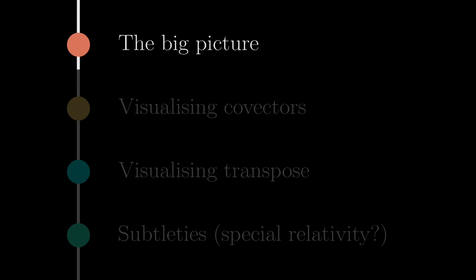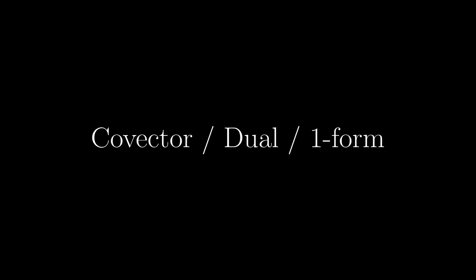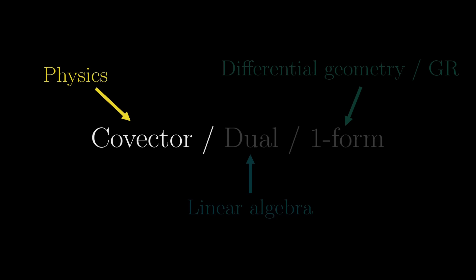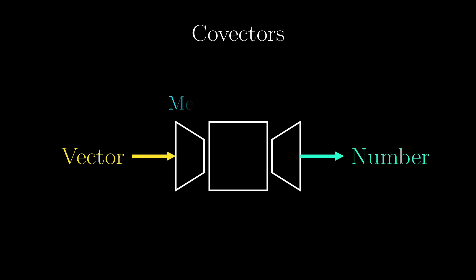The starting point is the concept of a covector — also called dual or one-form, because in different contexts different names are used, but I'm going with covectors here. Covectors are basically machines that will eat a vector and output a number. I like to call this machine a measuring device — it measures the vector. These are special devices in that they are linear.